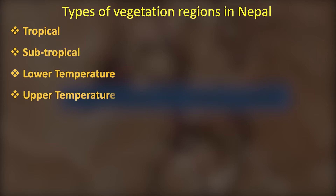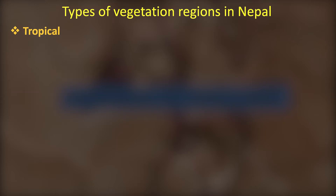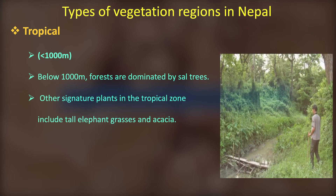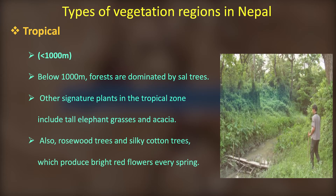Tropical vegetation is found below 1,000 metres. There are mainly Sal trees, small trees, rosewood, grass, Pines, and Silk Cotton trees in this zone.